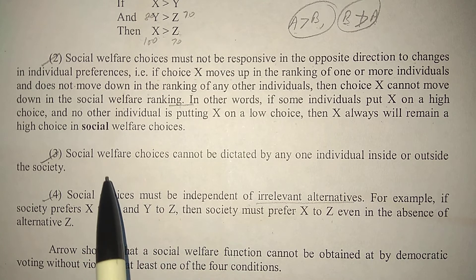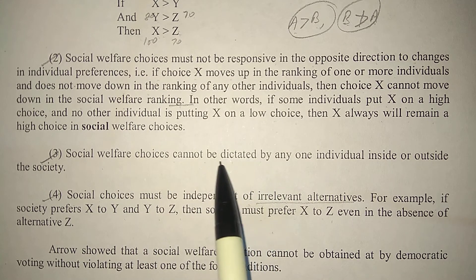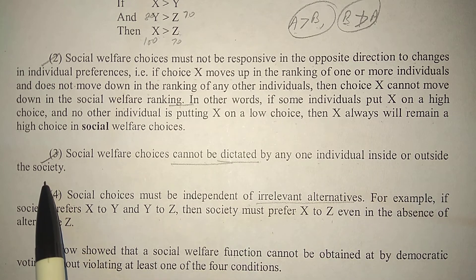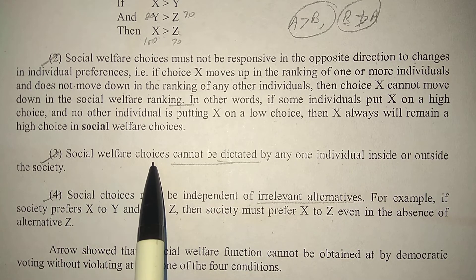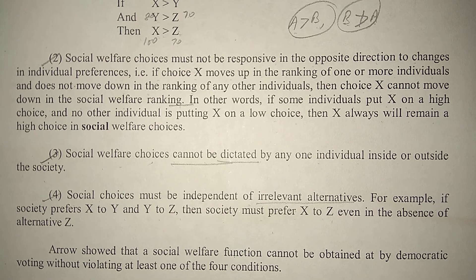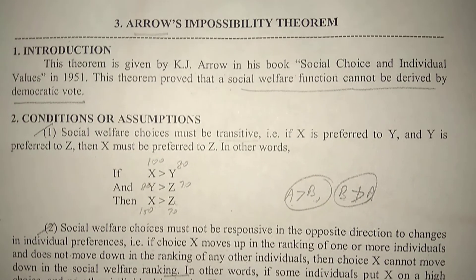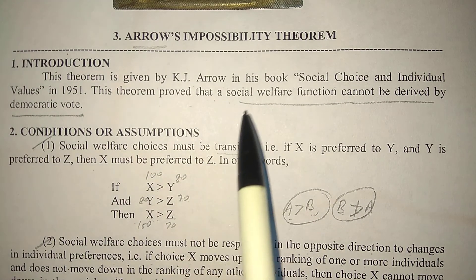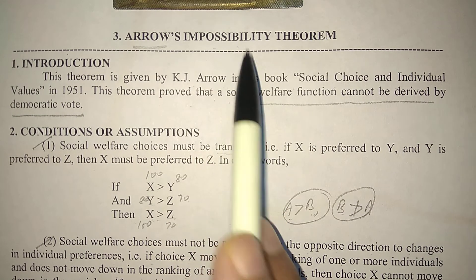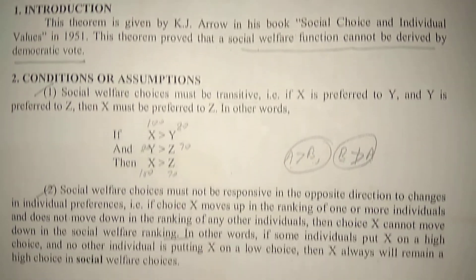Third condition: social welfare choices cannot be dictated by any one individual inside or outside the society. Social welfare means the welfare of the entire society, and no single person can decide it in a centralized way — that would be dictatorship. It must be decided democratically. But when we try to decide it democratically, this possibility does not materialize — and this is what Arrow proved in his theorem on the basis of these conditions.